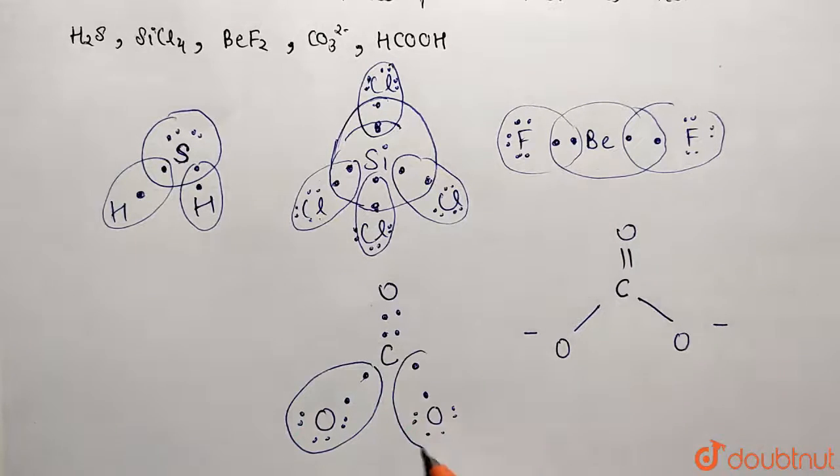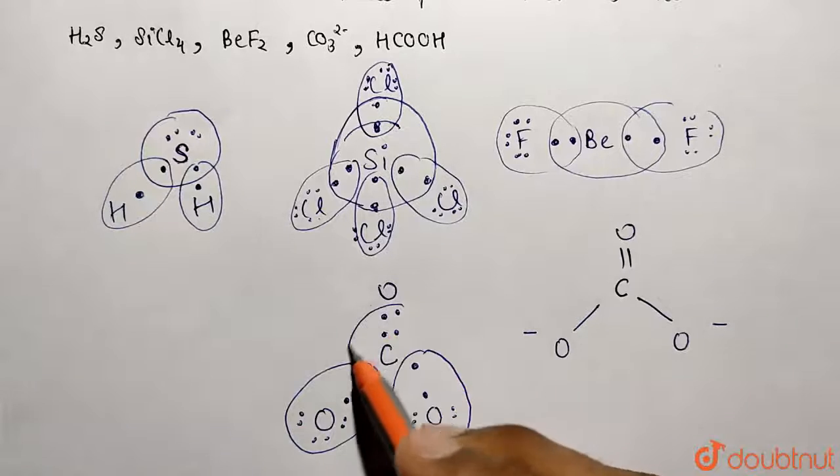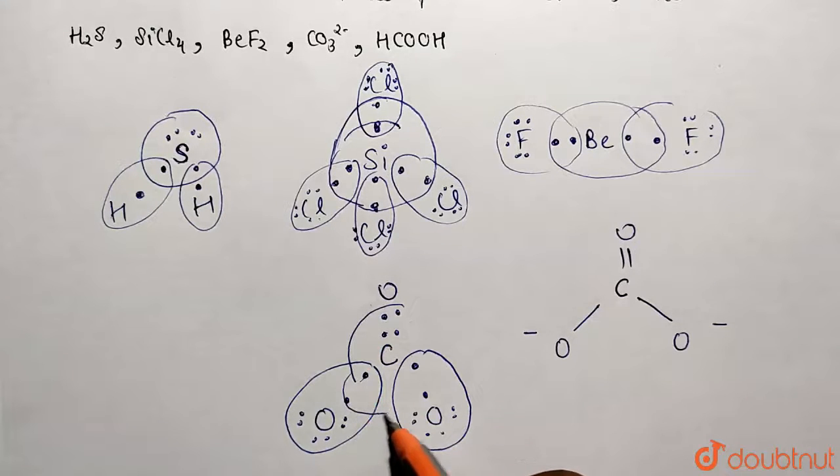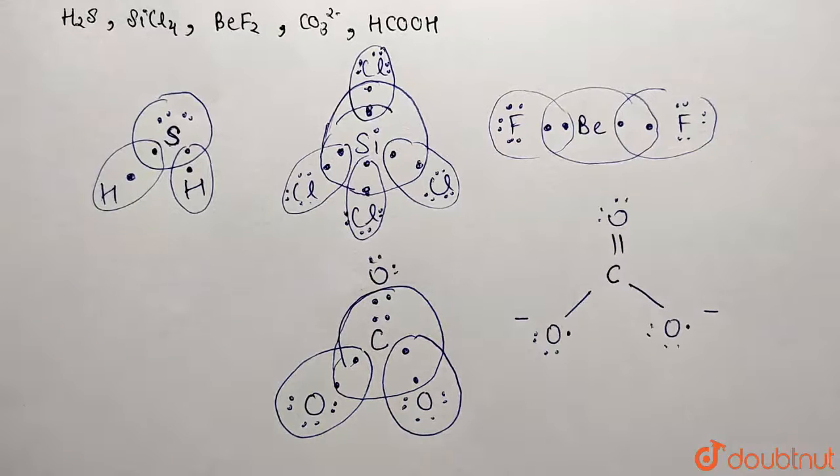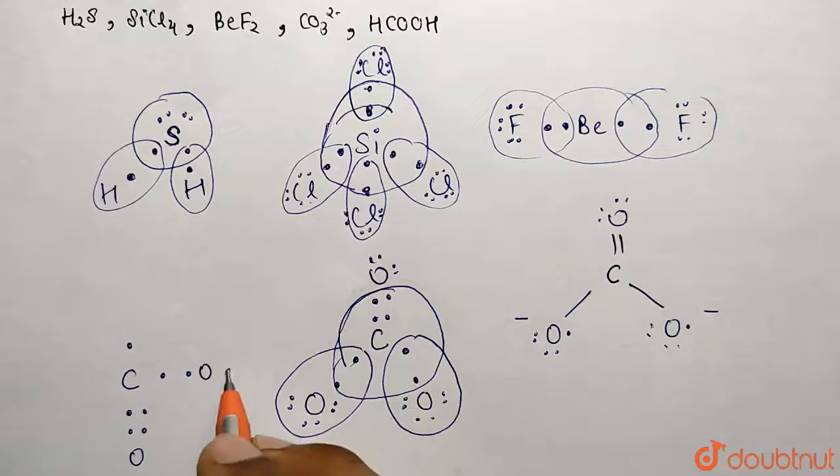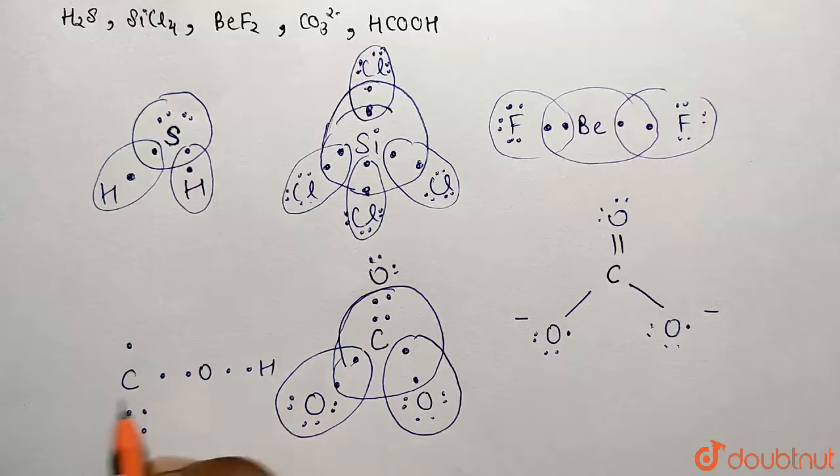Similarly, the last structure is HCOOH. Carbon has four valence electrons—one, two, three, four. It makes a double bond with oxygen: C double bond O. This side has O, and this side has H, so it's H-C double bond O-H.